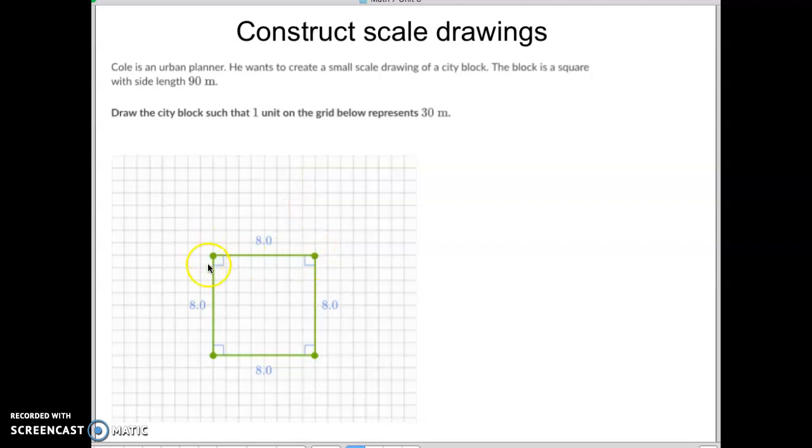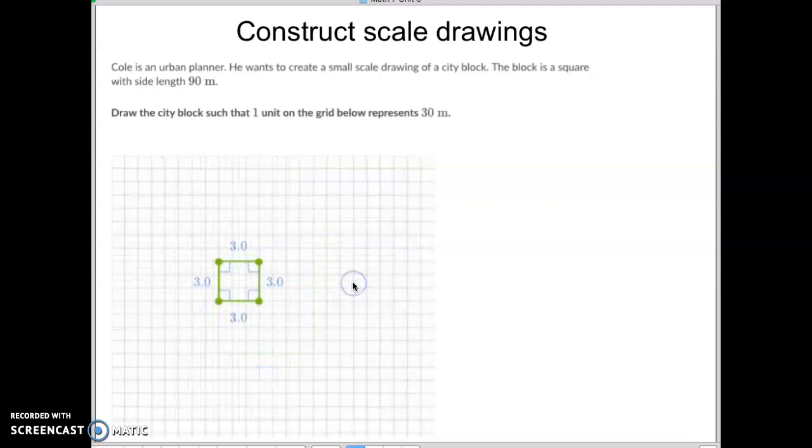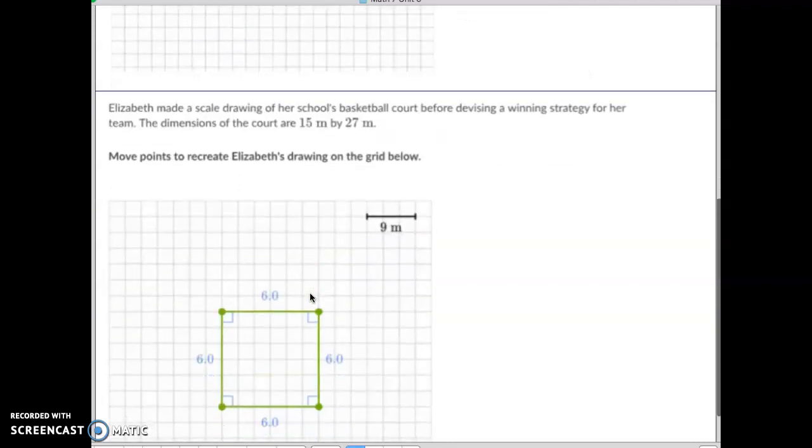So you need to take each of these dots and manipulate them until it looks like this, where it's 1, 2, 3 across by 3 down, which, by the way, 3 times 30 would be 90 by 90. Hopefully that makes sense. Let's try one more just to make sure, though.